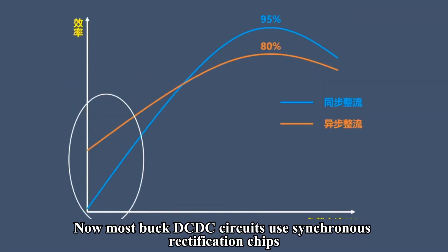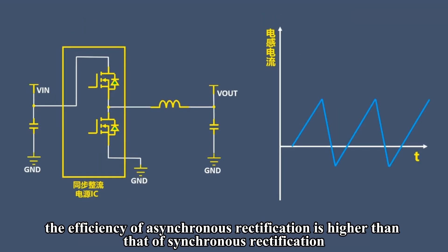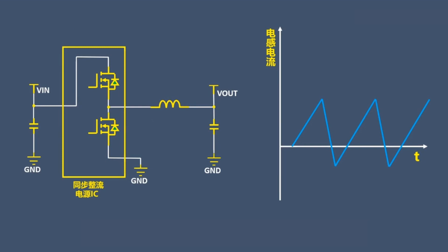Now most buck DC-DC circuits use synchronous rectification chips. At light loads, however, the efficiency of asynchronous rectification is higher than that of synchronous rectification.